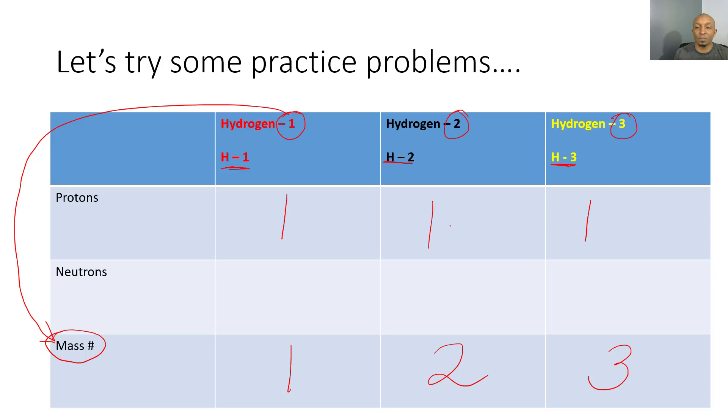Because isotopes have the same number of protons but a different number of neutrons. To find our neutrons: 1 plus what gives us 1? 0. 1 plus what gives us 2? 1. And 1 plus what gives us 3? 2. Notice: same number of protons, different number of neutrons, which ultimately has an impact on our mass number.